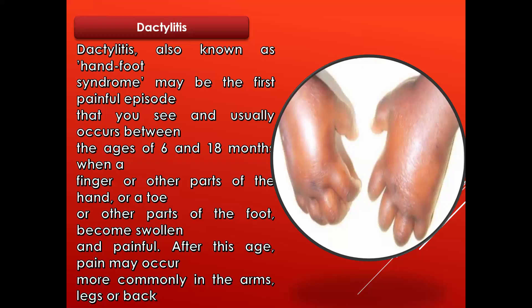In summary, we have been able to look at how sickle cell presents with poor growth and development, how sickle cell leads to painful episodes, and how it also leads to dactylitis. In previous sections, we looked at how it leads to anemia and jaundice. Together, these give a good understanding of the signs and symptoms of sickle cell disease.